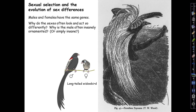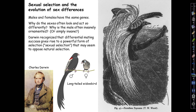Why do the sexes often look and act so differently? Why is the male often insanely ornamented — and in other ways often simply insane, as you may have noticed? The young Darwin recognized as soon as he'd figured out natural selection that a different form — what he named sexual selection — was at work, which he named as a completely different process. We're not so sure today that it's quite as different and opposed to natural selection as he thought, but that's a difference of emphasis, not really of substance.